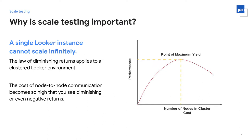Why is scale testing important? The main reason is that a single Looker instance cannot scale infinitely. The law of diminishing returns applies to a clustered or single-node Looker environment. If we look at the graph on the right-hand side, you'll see performance on the y-axis and number of nodes in the cluster or the cost of the infrastructure on the x-axis. As you increase the number of nodes in the beginning, you'll see an improvement in performance delivered. Then we hit the point of maximum yield, and after that point, as we add additional nodes, we do not see the same increase in performance — in some cases, we even see decreases in performance. The reason for that is the cost of node-to-node communication between the different nodes of Looker within the cluster has become so high that it's driving these negative returns on your investments.